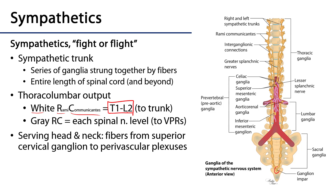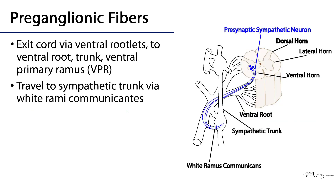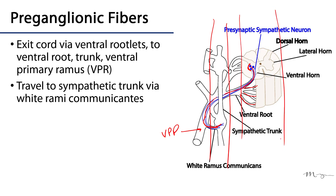In terms of the head and neck, these are all being served from fibers of the superior cervical ganglion via perivascular plexuses. The pathway of sympathetic fibers begins in the IML, or lateral horn of the spine, where preganglionic sympathetic neurons exit out the ventral rootlets, through ventral roots, through the trunk, and then out through the ventral primary ramus (VPR), where they leave through white rami communicantes to enter the trunk.